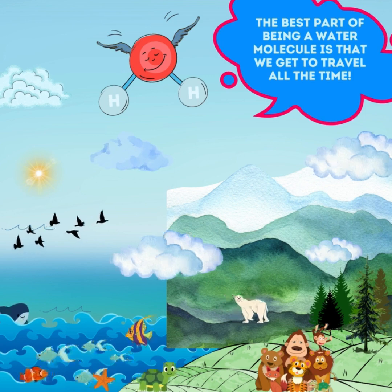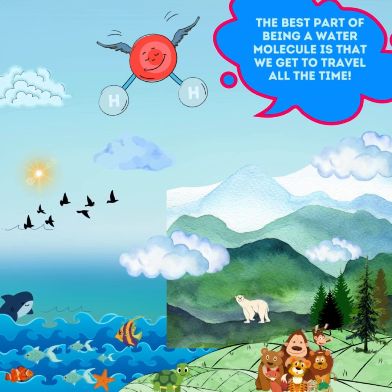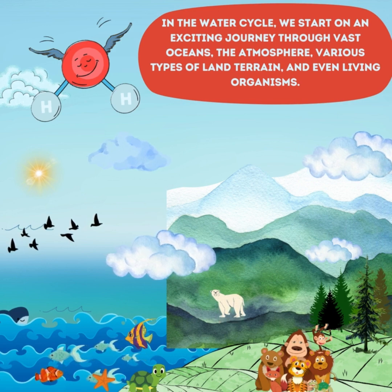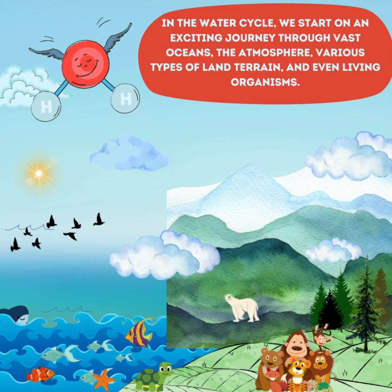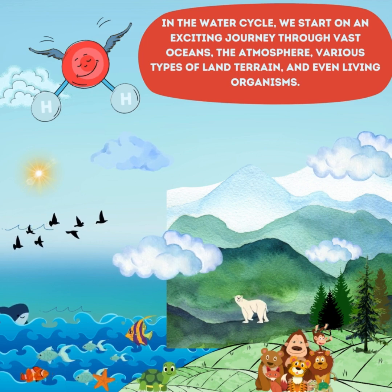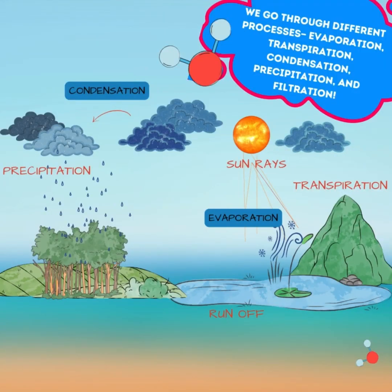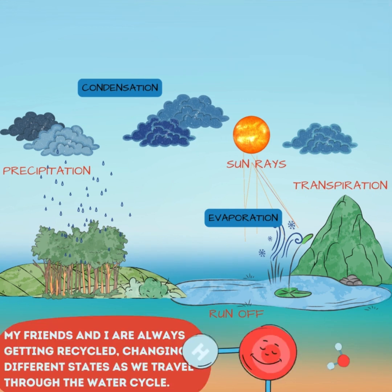The best part of being a water molecule is that we get to travel all the time. In the water cycle, we start on an exciting journey through vast oceans, the atmosphere, various types of land terrain, and even living organisms. We go through different processes: evaporation, transpiration, condensation, precipitation, and filtration. My friends and I are always getting recycled, changing different states as we travel through the water cycle.